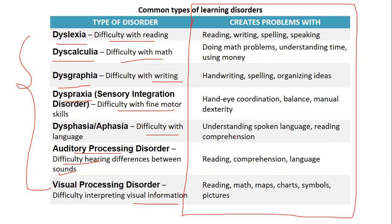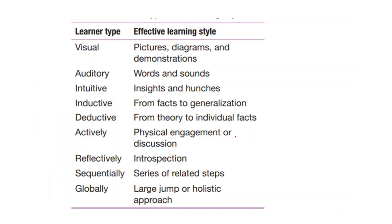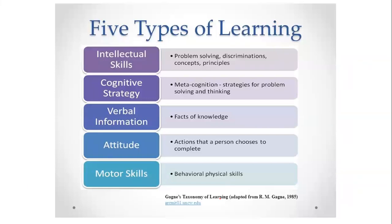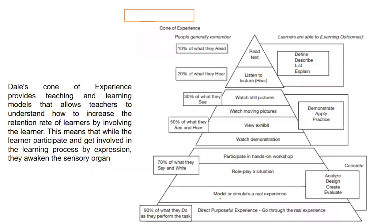Types of learning: visual (pictures), auditory (words and sounds), intuitive (insights), inductive (facts to generalization), deductive (theory to individual facts), active (physical engagement, motor skills), reflective (introspection), sequential (in series), global (holistic). Five types of learning: intellectual (problem-solving), cognitive (metacognition — strategies for problem-solving), verbal (facts of knowledge), attitude (actions), motor skills (physical skills).